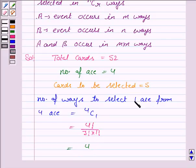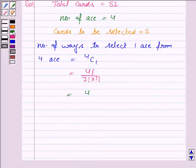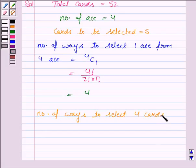Now, since we have already selected one card, we have to choose 4 more cards. The number of ways to select 4 cards from the remaining 48 cards is equal to 48C4.